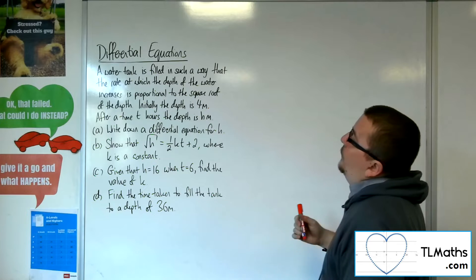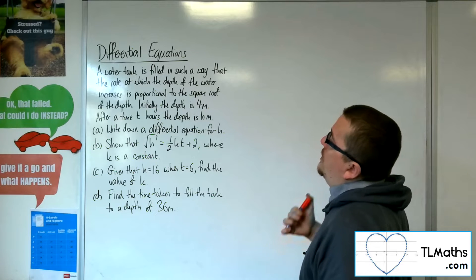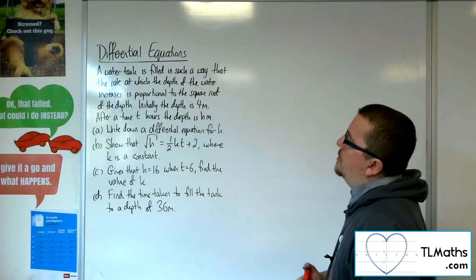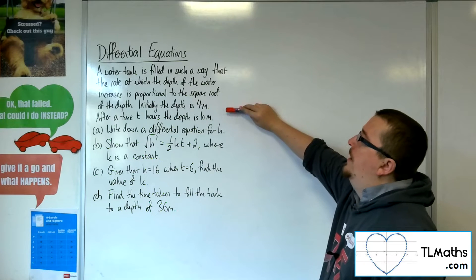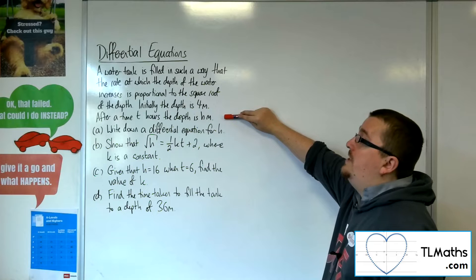A water tank is filled in such a way that the rate at which the depth of the water increases is proportional to the square root of the depth. Initially the depth is 4 metres, after a time t hours the depth is h metres.